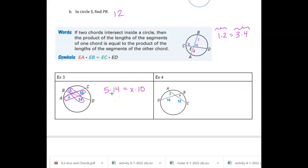And since you're multiplying, it doesn't matter the order that you wrote them in, as long as you have the same parts of each chord together. All right, so then we would just solve this. So we get 70 equals 10X. Those are being multiplied, so we'll divide by 10. And X equals 7.